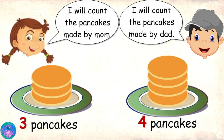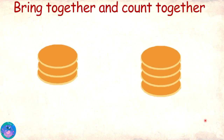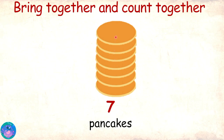But how do we find out the total number of pancakes? Sam and Zoe, you can get the total number of pancakes by bringing them together and counting them together. So now we have brought the pancakes together. Zoe, would you like to count them? Sure! One, two, three, four, five, six, seven. Seven pancakes.